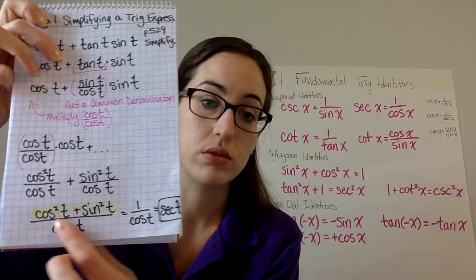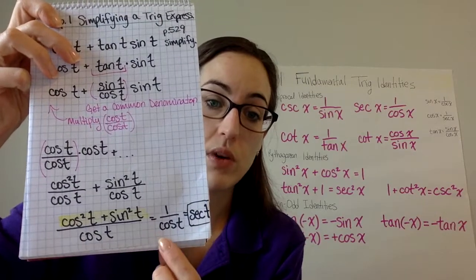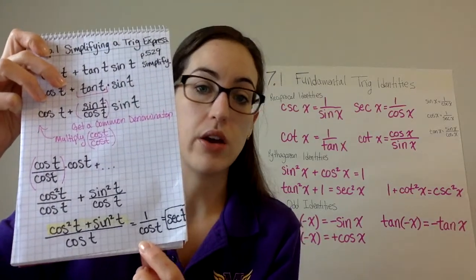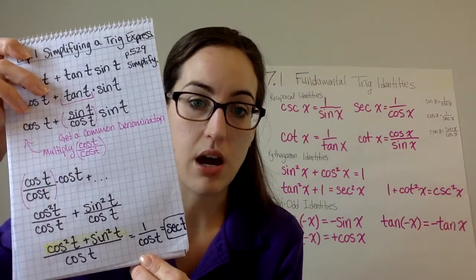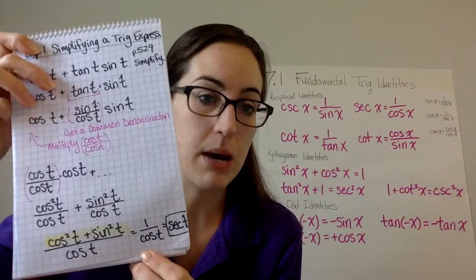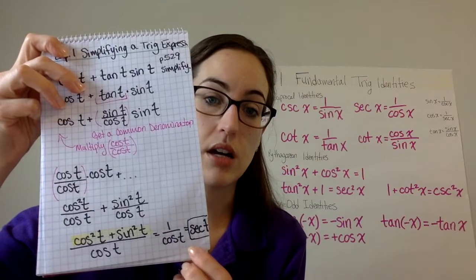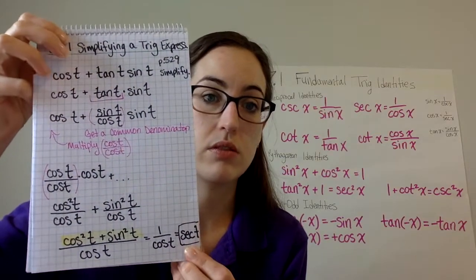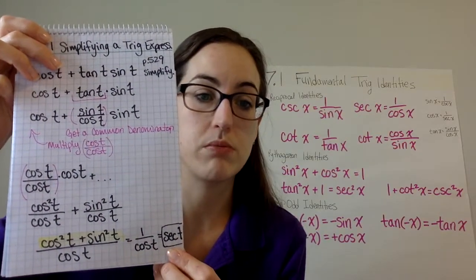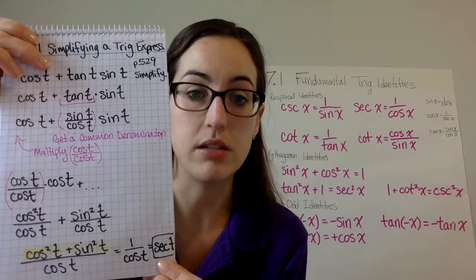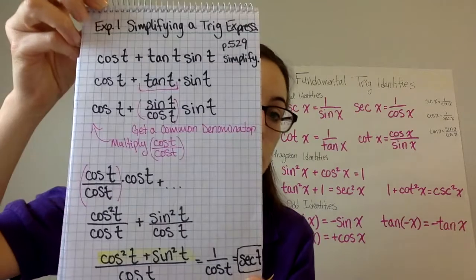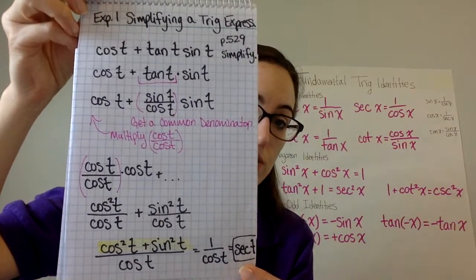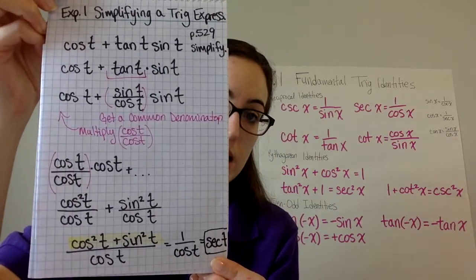I challenge you, maybe you get to this point, 1 over cosine t. Oh, that looks great, I only have one thing there. It just happens to be in the denominator. It's tempting to stop there, but you're not done. Try and get everything as simplified as you most possibly can. And that means not having a denominator if you can help it. I'm going to flip to the next example. You can pause here if you need to copy that down.